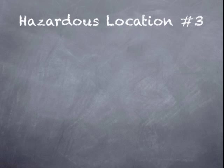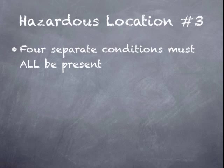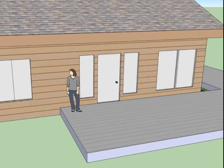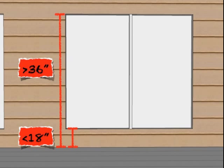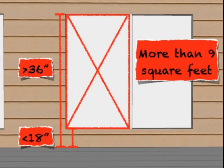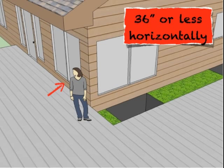This is the third one listed in the IRC provision. All four conditions must be present — there are four separate conditions, and if any one of those conditions is not present, then the location is not considered a hazardous location. Let's go to a 3D example. The first condition is that the bottom of the glazing must be less than 18 inches above the walking surface. The top of the glass must also be greater than 36 inches above the walking surface. The glass must be more than 9 square feet in area, and the glass must be 36 inches or less horizontally from the walking surface. So for that glass, safety glazing is required.